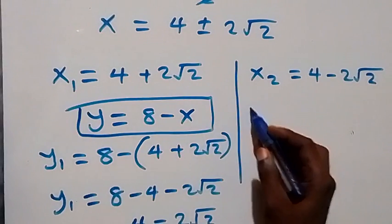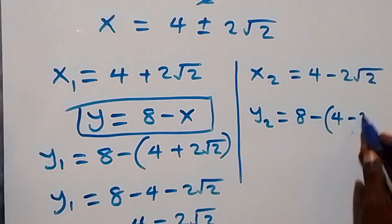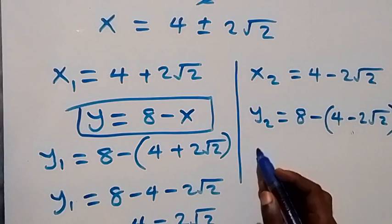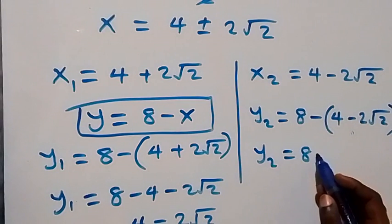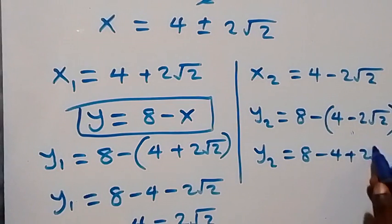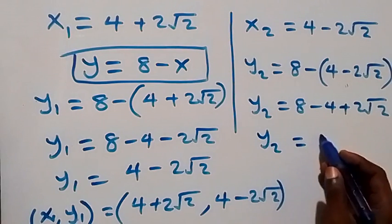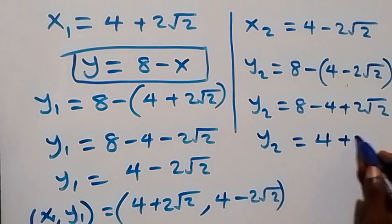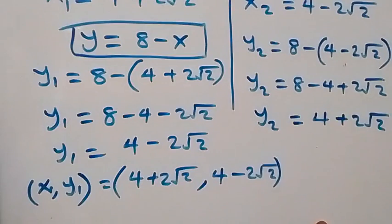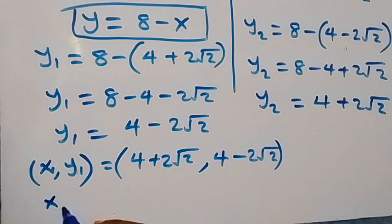For the second solution, y2 equals 8 minus x2, which is 8 minus (4 minus 2 root 2). This gives y2 equals 8 minus 4 plus 2 root 2, so y2 equals 4 plus 2 root 2. Therefore the second set of solutions is (x2, y2) equals (4 minus 2 root 2, 4 plus 2 root 2).